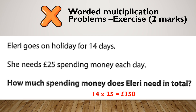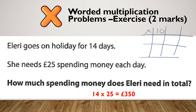So doing 14 times 25 in the grid method, I'm going to draw my grid — I need an extra line this time. 14 is 10 and 4, and 25 is 20 and 5. Don't forget, if you've done 25 and 14 the other way around, it doesn't matter — multiplication can be done either way. 20 times 10: 2 times 1 is 2 with two zeros, so 200. 20 times 4: 2 times 4 is 8, add my zero — so 80. 10 times 5 is 50, and 5 times 4 is 20. In this row I've got 280 in total (200 plus 80), and in this row 70 in total (50 plus 20). Adding these together gives me 350.